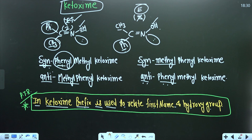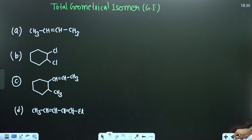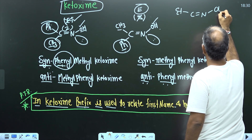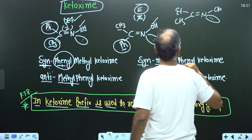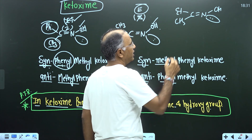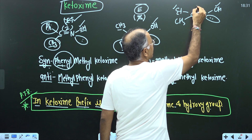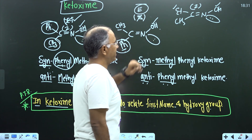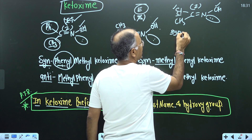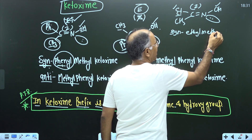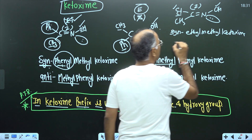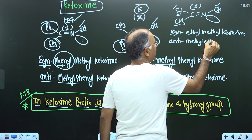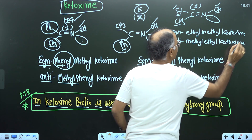Consider one more example: if there is ethyl and methyl. For E/Z, we follow atomic number — high priority on the same side — this means it is Z-isomer. Since there is no hydrogen on the carbon, it is a ketoxime. For syn/anti: if I write syn-ethyl, I write syn-ethyl methyl ketoxime; or for anti, I write anti-methyl ethyl ketoxime.